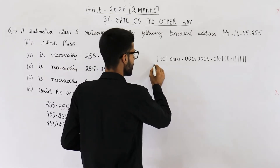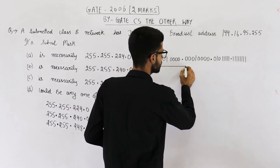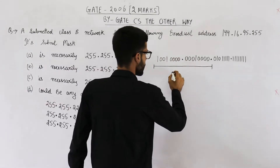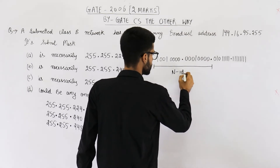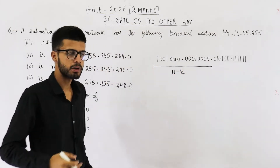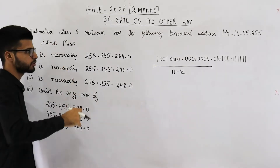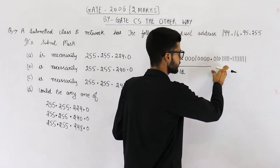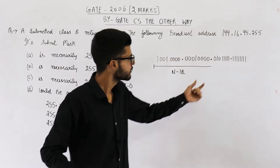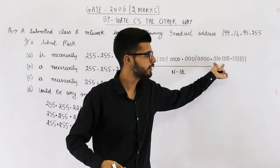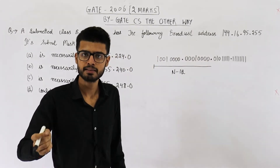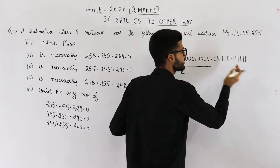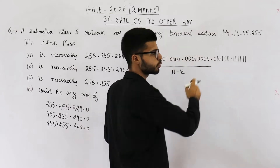We are given the broadcast address of some class B network and we need to find its subnet mask. Because it is a class B network, the first two octets are surely the network ID. Because we have subnetted it, we have created some subnets, meaning we have extended this network ID.